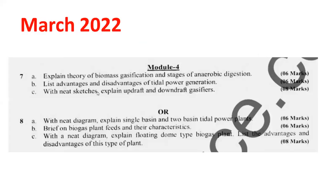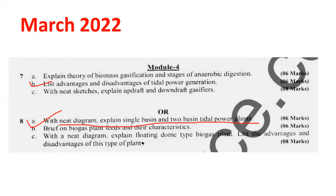Now we will discuss the last topic: tidal energy. In March 2022, list the advantages and disadvantages of tidal power generation. There are two types of tidal power generation: single basin arrangement and double basin arrangement — they ask you directly. It carries a weightage of 6 marks. Single basin and double basin are very, very important.